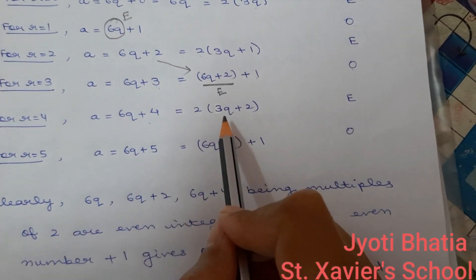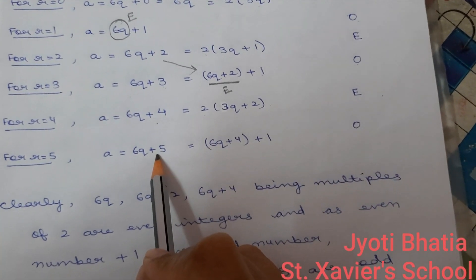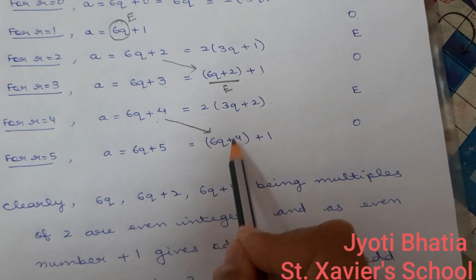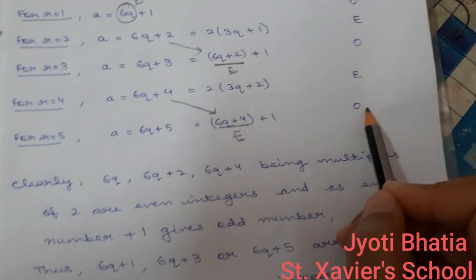6q plus 4. Again, 2 can be taken common. Being multiple of 2, it will be even. 6q plus 5. Previous even number plus 1 gives us odd. Now,